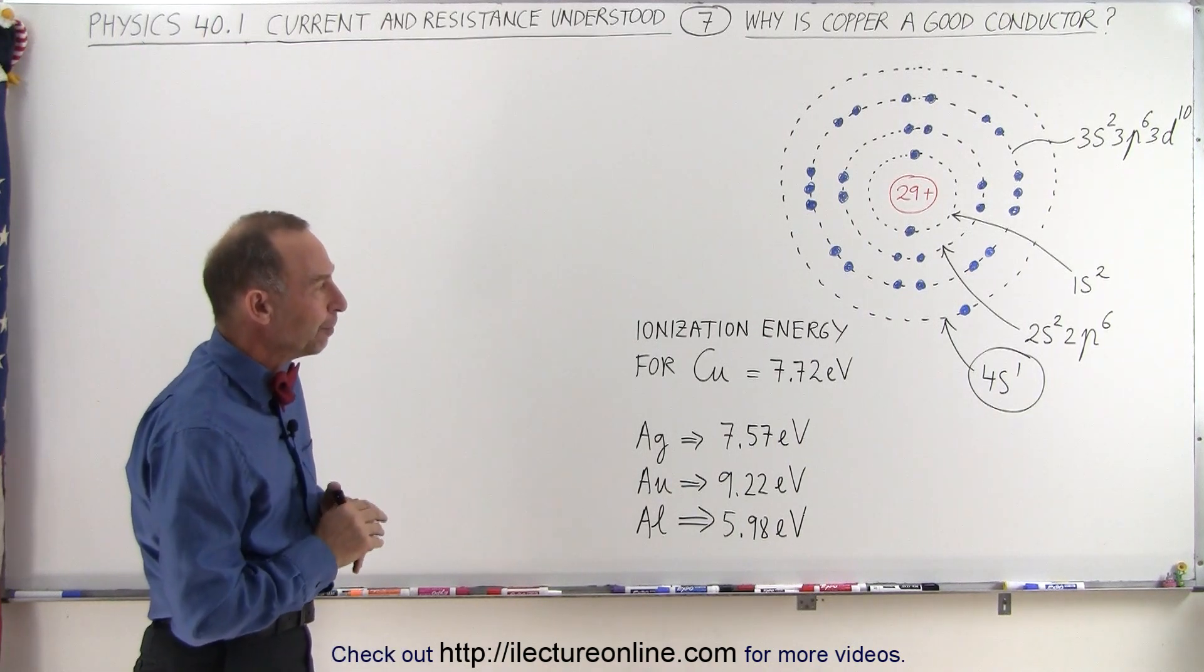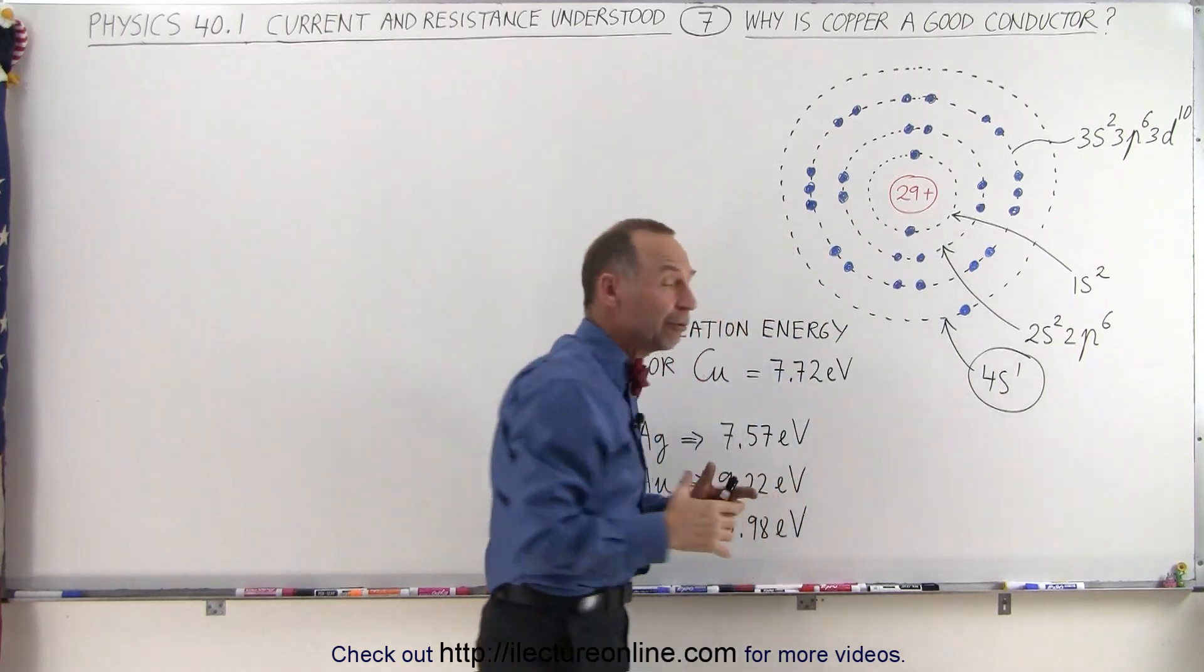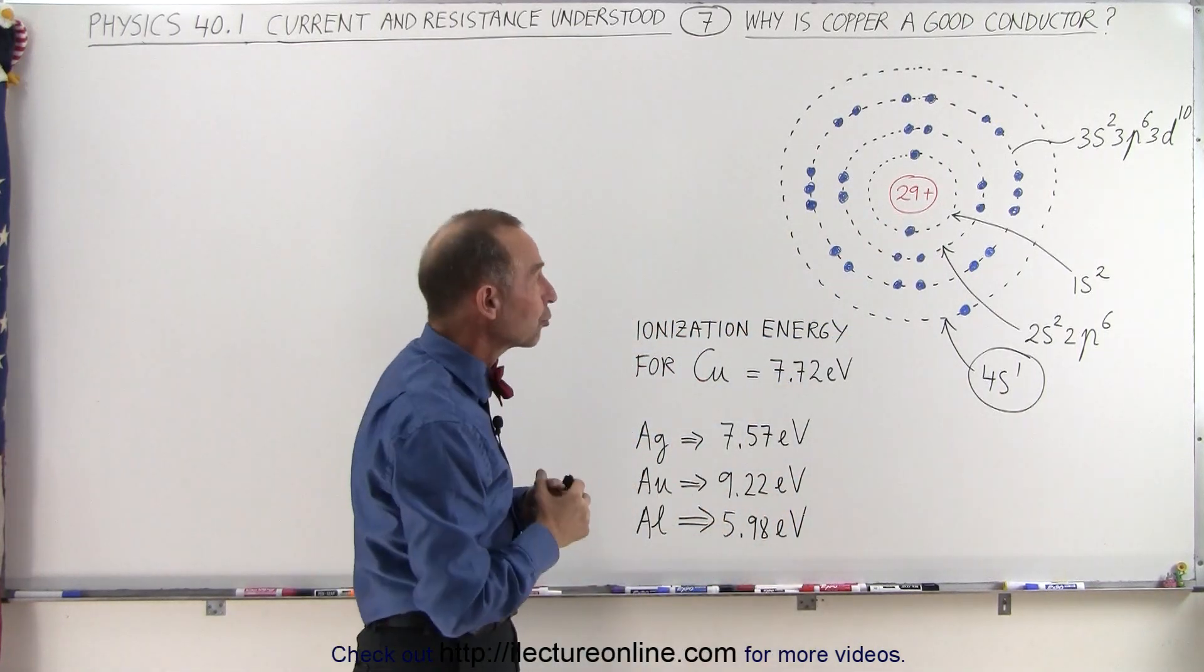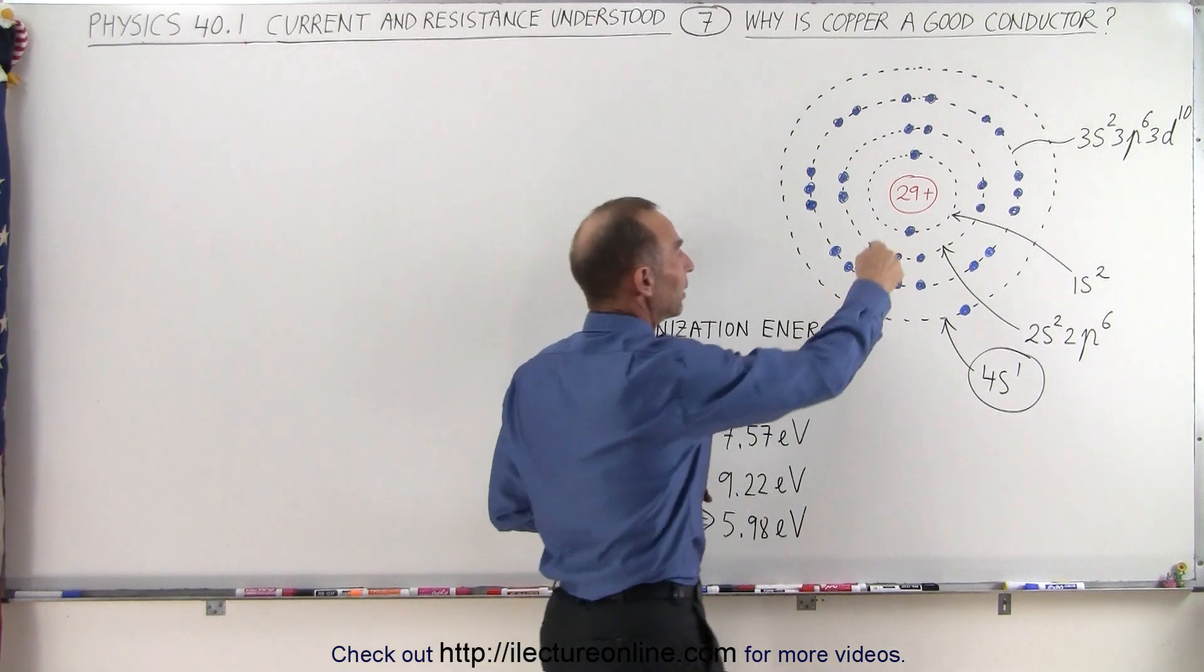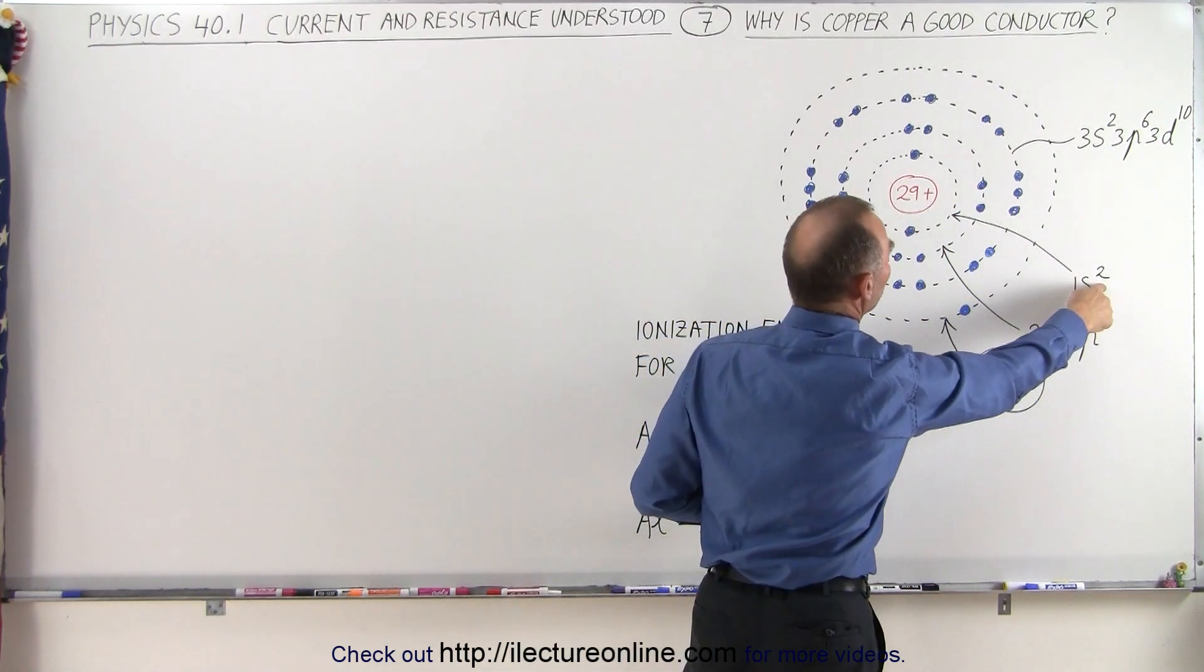Take copper for example. Copper has 29 protons in its nucleus and therefore it typically has 29 electrons. The first two are in the innermost energy level and fill up the 1s² orbital.